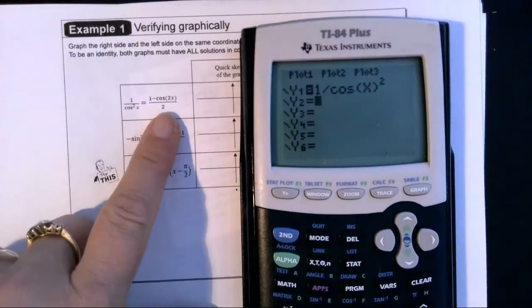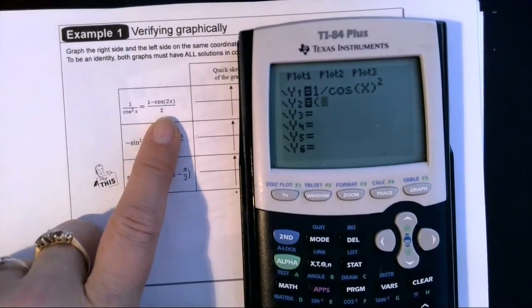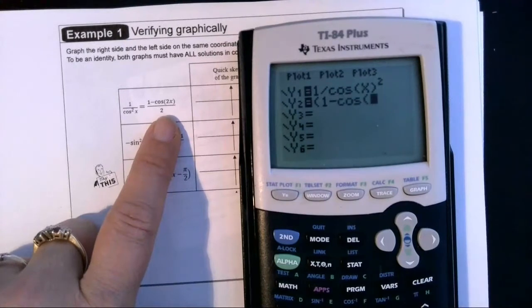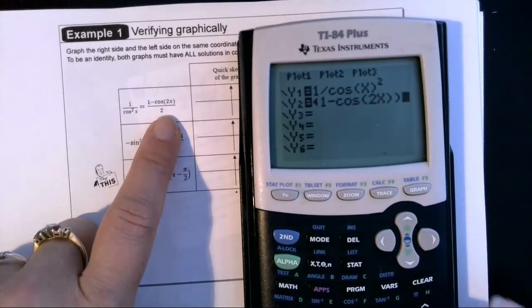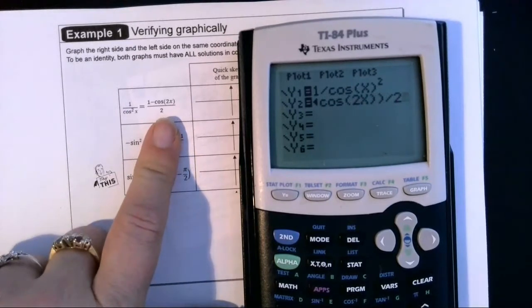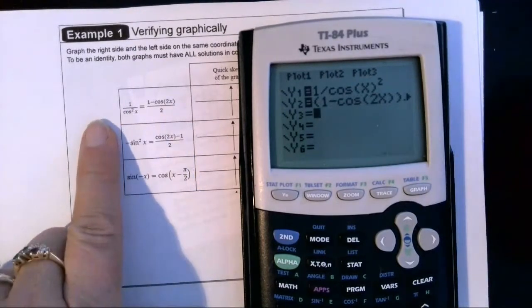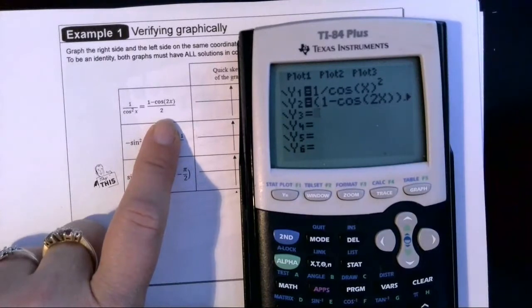Then in our y2, we're going to use parentheses around the numerator. So 1 minus cosine of the quantity 2x. Close the parentheses on the numerator and divide by 2. So we've got the left side in y1, the right side in y2.